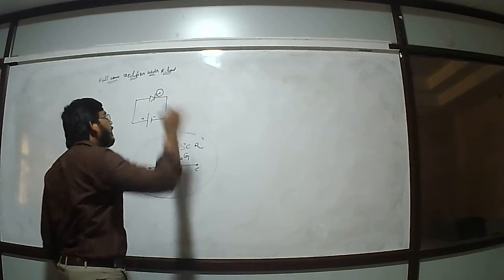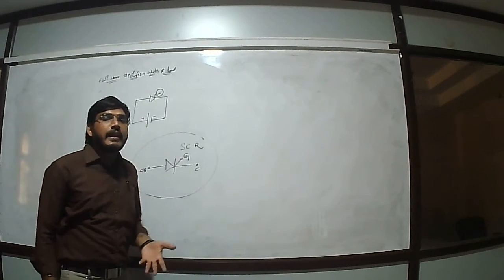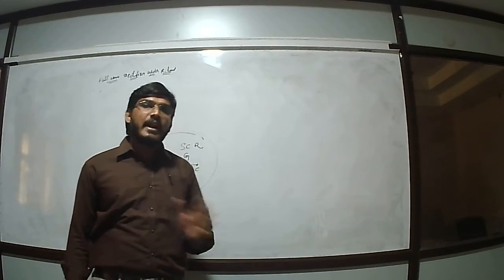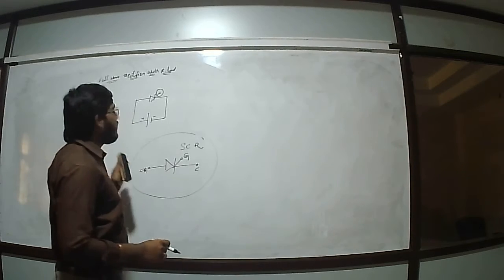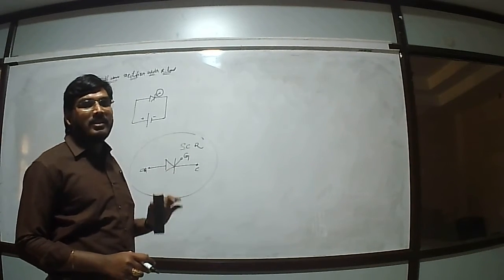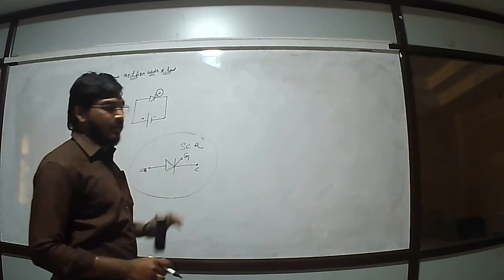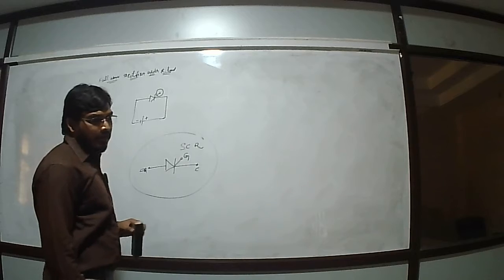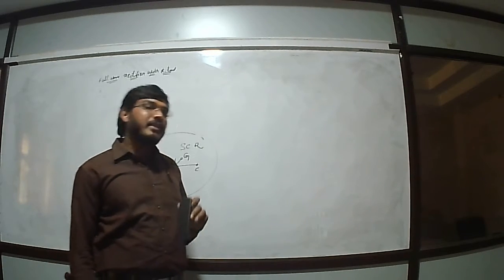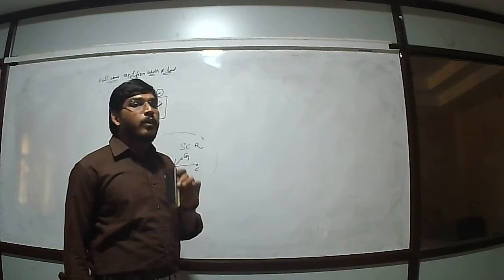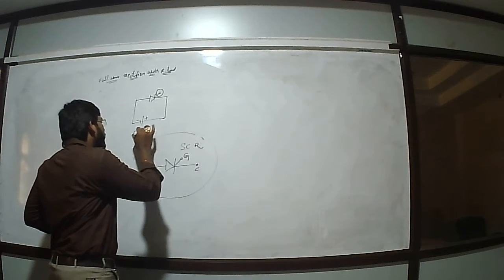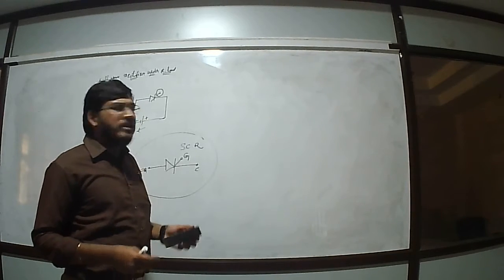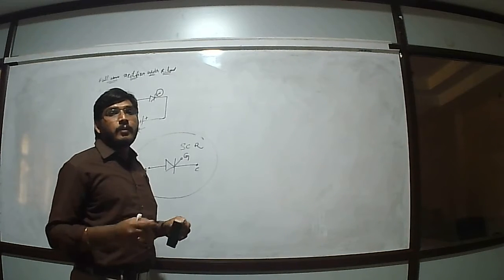Whenever we give the gate supply to the gate terminal, immediately the potential barrier will be overcome, and the flow of electrons will start moving from anode to cathode. At that stage, the thyristor will operate in forward conduction mode. If we connect it vice versa — anode to the negative terminal and cathode to the positive terminal — then the thyristor enters the reverse blocking stage, where only a small leakage current flows due to minority carriers.